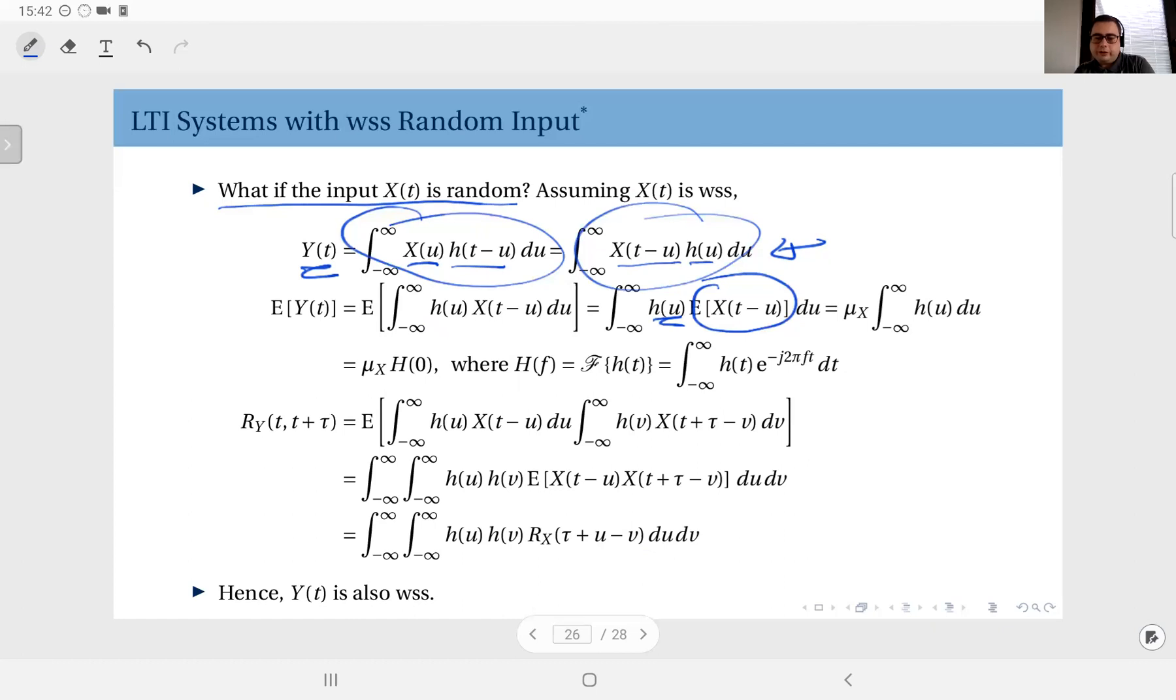Therefore it's just μ multiplied by the integral of h(u), the integral of the impulse response. But remember the impulse response, if you take its Fourier transform, the Fourier transform of the impulse response, that's the impulse response in the frequency domain.